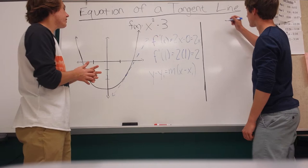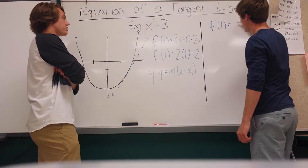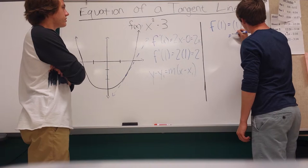So to find that, we'll have to plug our x value into the first equation, the original, which is x squared minus 3. So Andy's going to plug in the 1 for the x. And he gets 1 squared minus 3, which is negative 2.